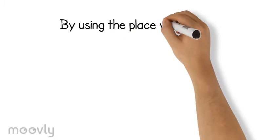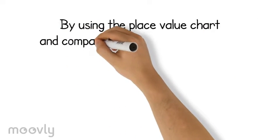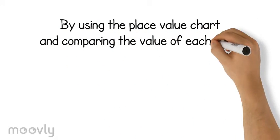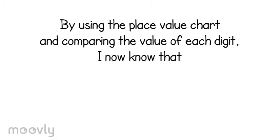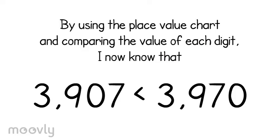By using my place value chart and comparing the value of each digit, I now know that 3,907 is less than 3,970.